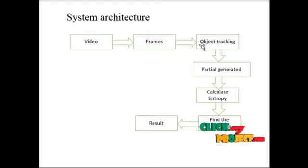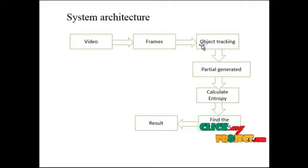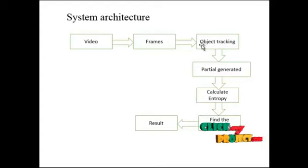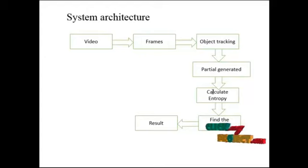We are tracking the human based on background suppression. After background suppression, we allocate the particles for each foreground image — this is the object tracking process. After particle allocation, we calculate the entropy based on the particle movements.